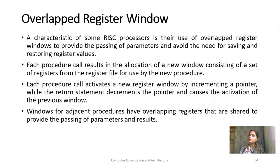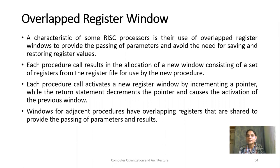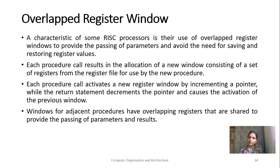The characteristic of some RISC processors is the use of overlapped register windows to provide passing of parameters, and we avoid the need of saving and restoring the register values. Each procedure call results in the allocation of a new window consisting of a set of registers from the register file to be used by the new procedure. Each procedure call activates a new register window by incrementing the pointer, while a return statement decrements the pointer and causes the deactivation of the previous window.